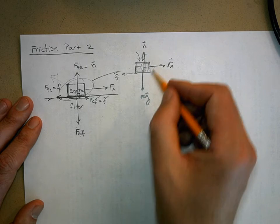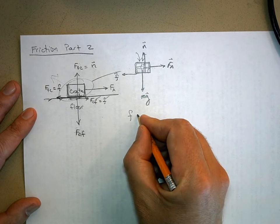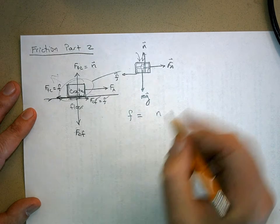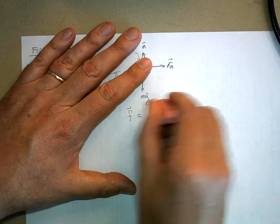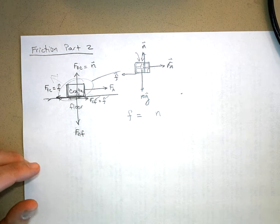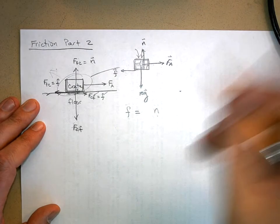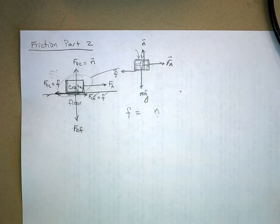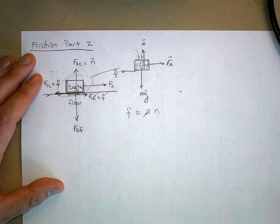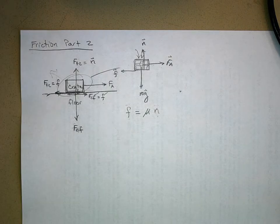We can do an experiment to show this is true. We can say this force of friction is directly proportional to the normal force — and we're really talking about magnitudes here, because the force of friction acts to the left while the normal force is perpendicular to it. The amount of friction you get for every unit of normal force depends on the materials — it depends on mu. Mu is what we call the coefficient of friction, and it depends on the materials involved.